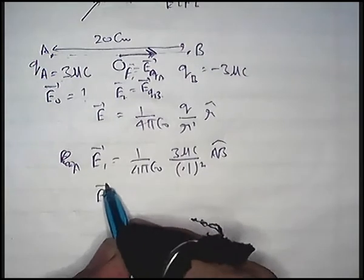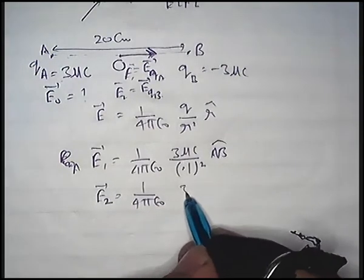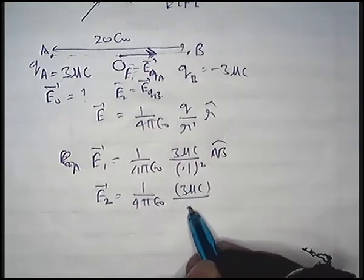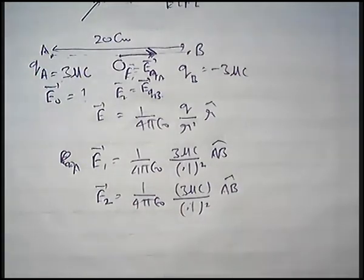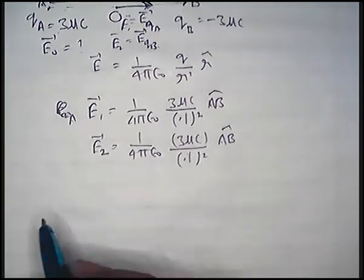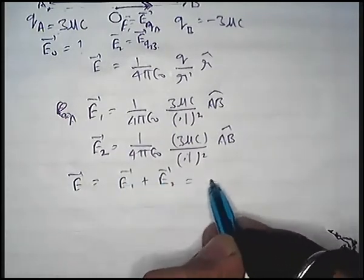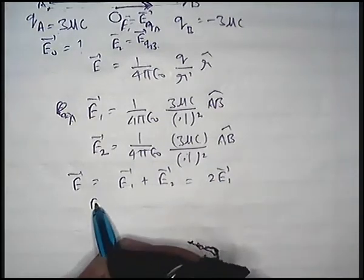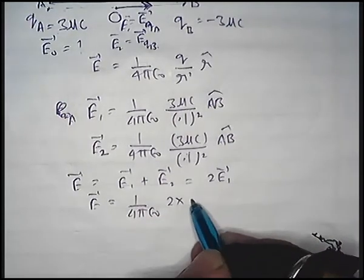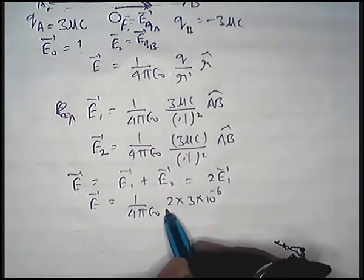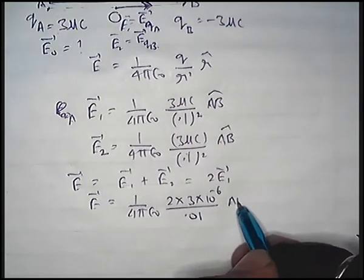Similarly, the electric field due to the second charge E2 equals 1 by 4 pi epsilon naught times 3 µC divided by 0.1 squared, and it is also directed along AB. Therefore, the net field at O equals E1 vector plus E2 vector, which equals twice E1 vector.